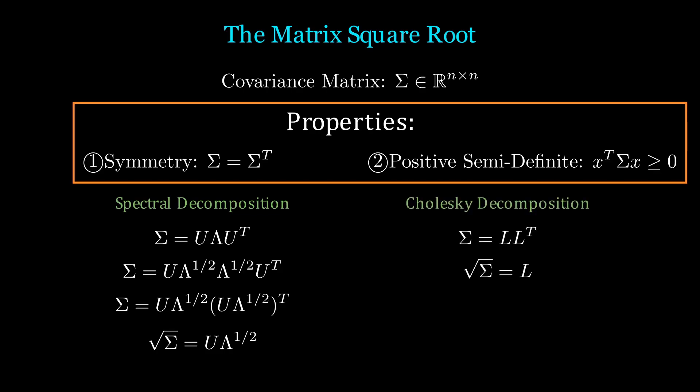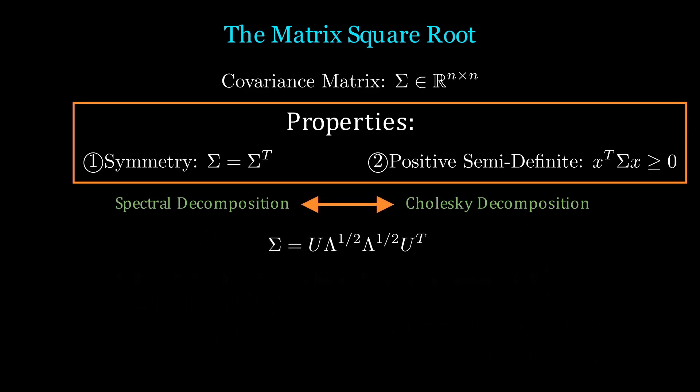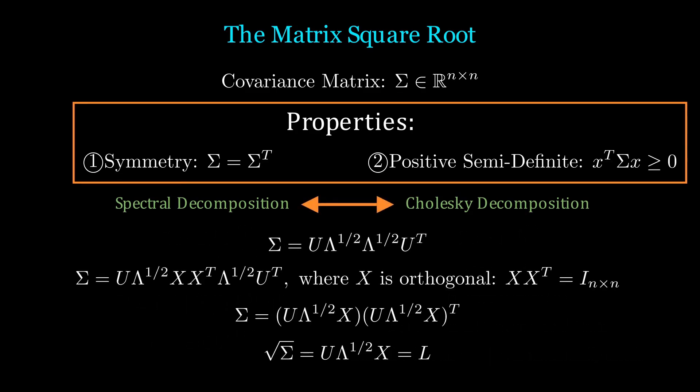What is more commonly done in the literature is to perform a Cholesky decomposition, where sigma equals LL transpose. What is special is that L is lower triangular and it is unique if sigma is positive definite. The reason of using the Cholesky decomposition is because it is very numerically stable. Some of you may ask the relation between these two methods. Well, we can inject an orthogonal matrix X in the middle of the spectral decomposition so that XX transpose is identity. Thus, there is a unique orthogonal matrix to relate the spectral and Cholesky decomposition.